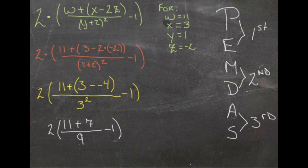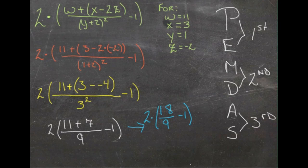Now we have 11 plus 7, a new color here. 11 plus 7 is 18, so we're going to have 18 over 9, minus 1, that whole thing times 2. 18 divided by 9 is 2. So we have 2 minus 1 inside the parentheses, times 2 outside the parentheses.